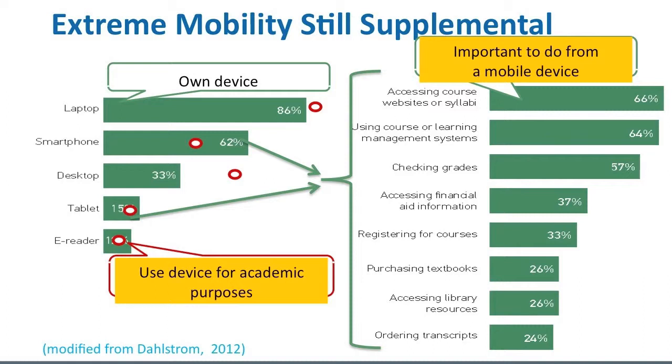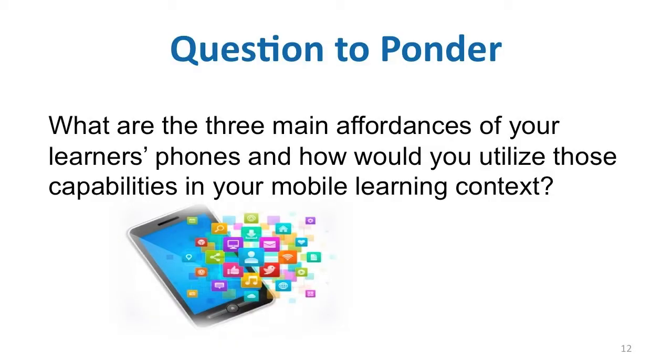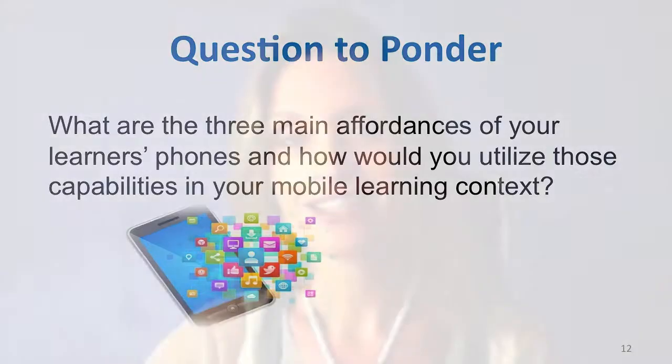Now that you've had a look at the features of the handset and how students are actually using them, I'd like you to reflect on this question: What are the three main affordances of your learners' phones, and how would you utilize these capabilities in your unique mobile learning context? Consider what type of phones your students use, what the infrastructure is, where and when they use them, what type of learning outcomes they use them for, and what are your students' specific needs and learning preferences.